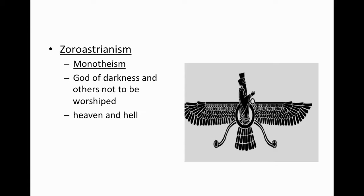Zoroastrianism is basically the beginnings of monotheism. This is fairly unique because the Greeks and the Romans were both polytheistic, whereas the Persians encouraged the idea of maybe a single god. This was more of a god of darkness, and this idea that there was a heaven and a hell — very early, early forms of kind of Christianity or monotheism. There is the beginning of the idea that instead of many gods, there is one god — and that god actually was seen as promoting negative things. So there was this idea of a good and a bad, a heaven and a hell. It's called Zoroastrianism.